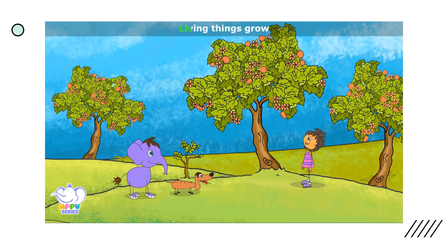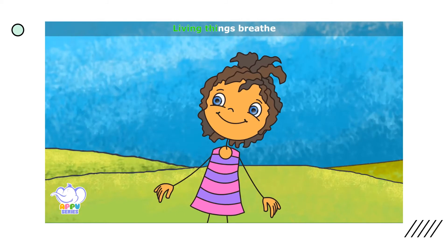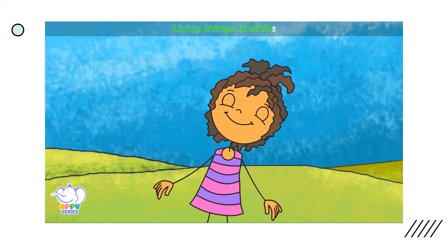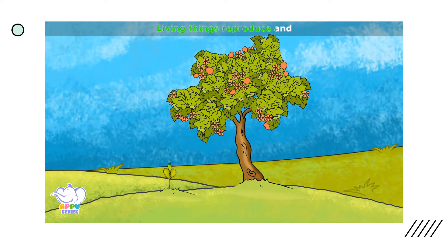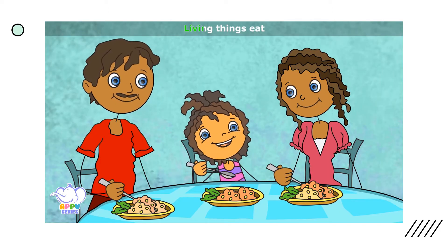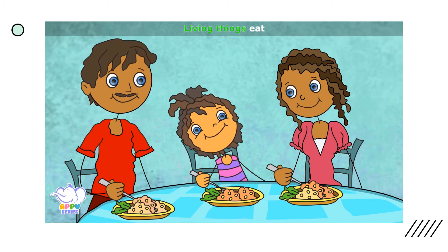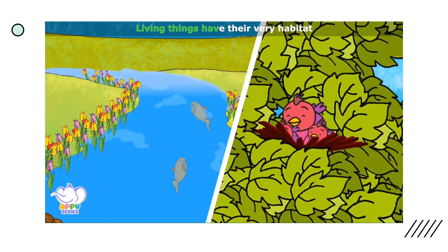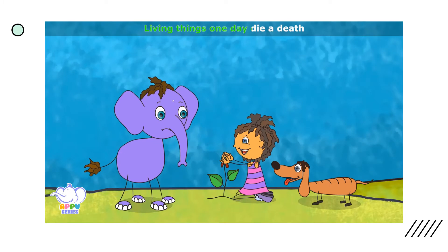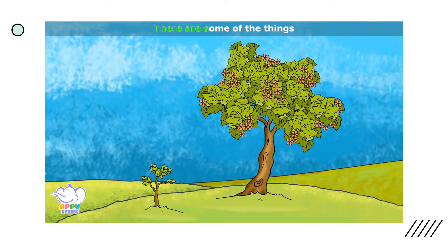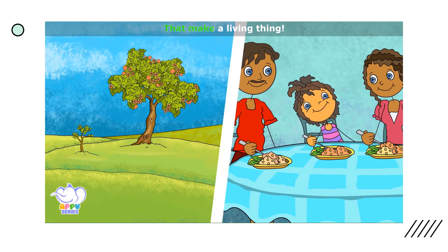Living things grow, living things breathe, living things reproduce, and living things eat. Living things have their very own habitats, and living things one day die. These are some of the things that make a living thing.